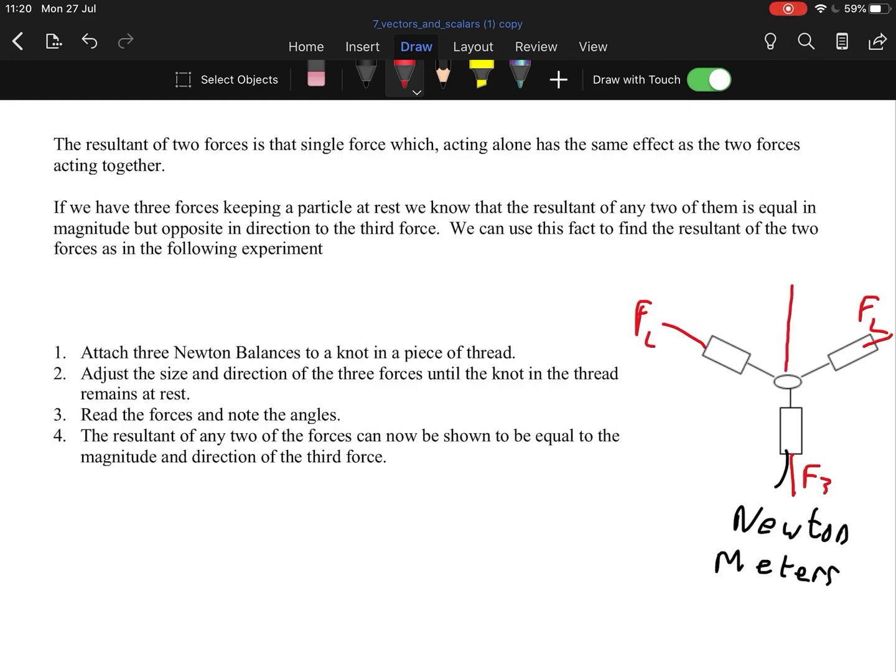The resultant of any two forces can now be shown to be equal to the magnitude and opposite direction of the third. In other words, there is a force here that is also F3 that is equal to this, because it's the resultant of these two. There is a force here, F2, which is equal to F2 here, which is the resultant of these two, and there is a force here, F1, which is equal to this F1, and it's the resultant of these two forces here. That's kind of what it is. That's what it means. It's very straightforward, simple to draw, three newtons on a knot, make sure the knot is at rest, and once it is, read the force on all three newtons, and then you can calculate out that there is the resultant force opposite each, and there you go.